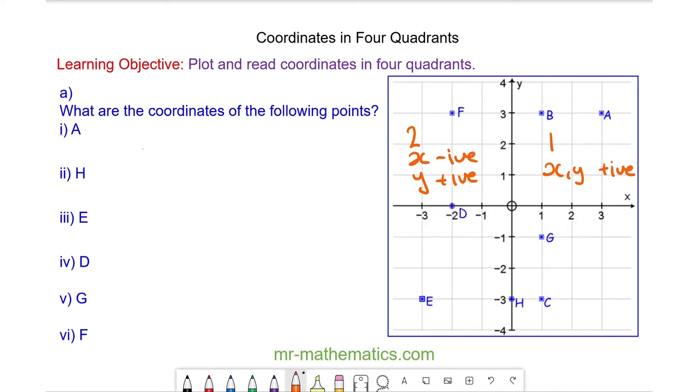The third quadrant is when both x and y are negative. You can see here. And the fourth quadrant is when x is positive and y is negative.